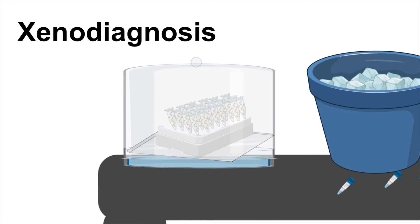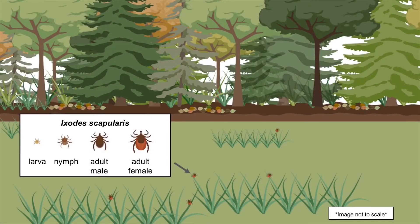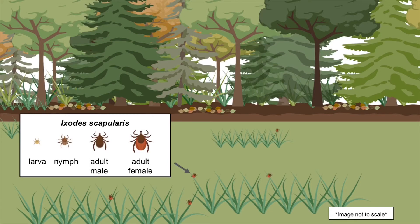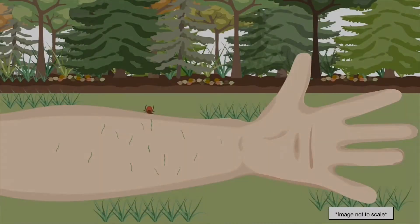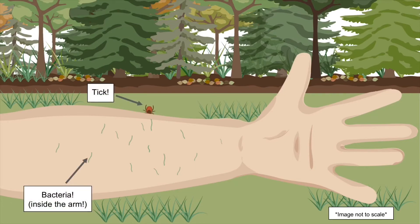Some investigators have also used a procedure called xenodiagnosis to find evidence of the bacteria in animals after antibiotic treatment. Xenodiagnosis, our study procedure, is a way to look for the bacteria using the ticks that host them, Ixodes scapularis, also known as the deer tick. So why do we think this method could be better than current diagnostic tests? Xenodiagnosis takes advantage of the evolutionary relationship between the bacteria and the tick that makes the bacteria good at finding the tick.